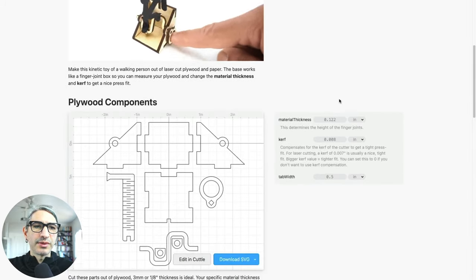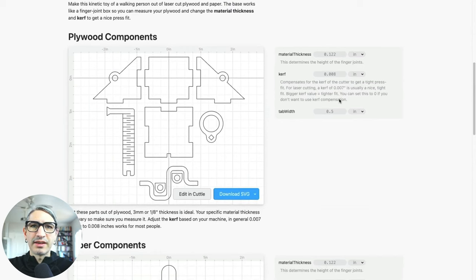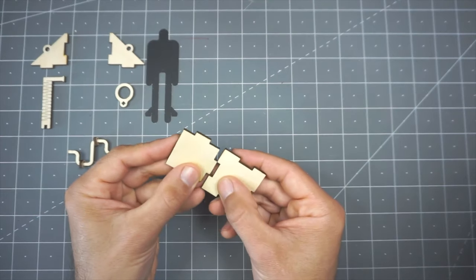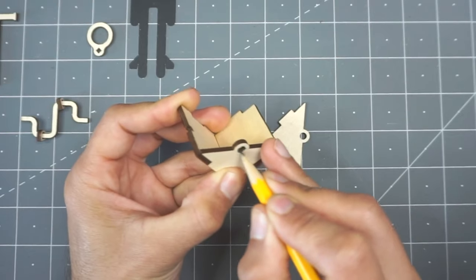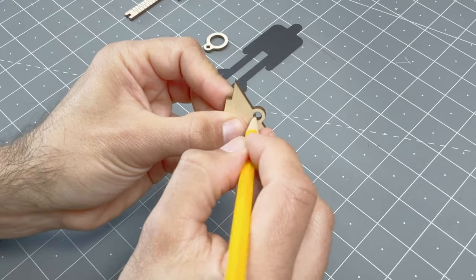The best part of the project is the Cuddle template he's provided that lets you fine tune the design for the thickness of your material and even the kerf of your laser. So much so that he doesn't even need glue to assemble the wood pieces. I also love this trick of using pencil graphite to lubricate the moving parts. You can get access to the template following the link in the video.